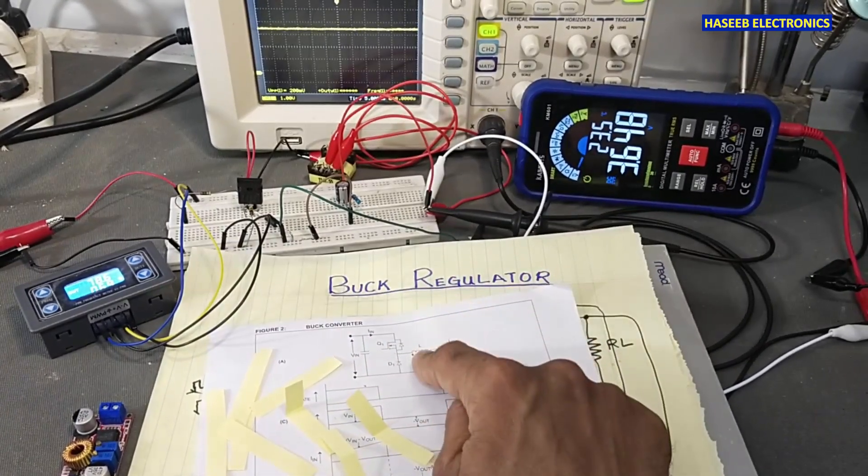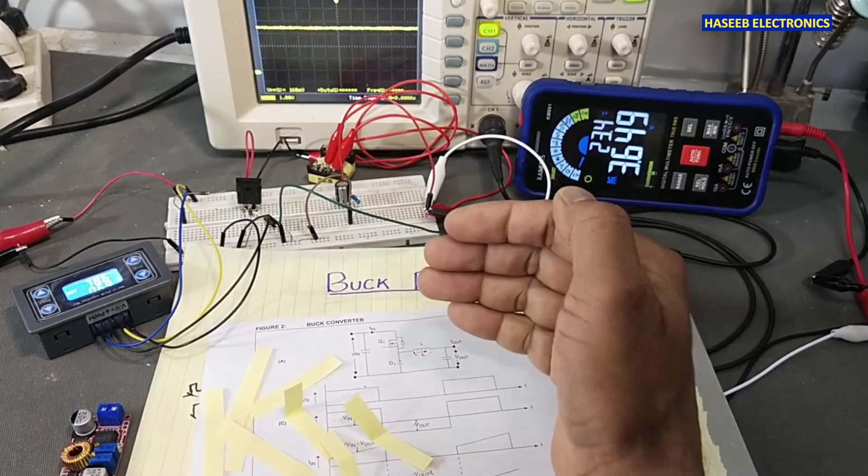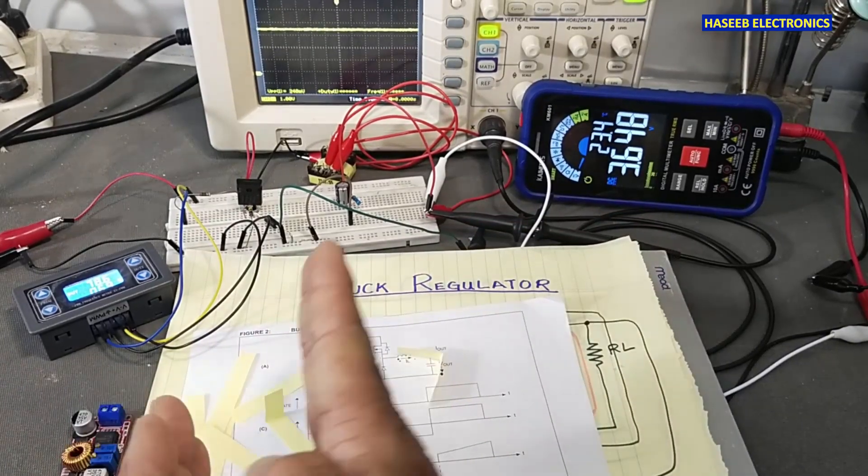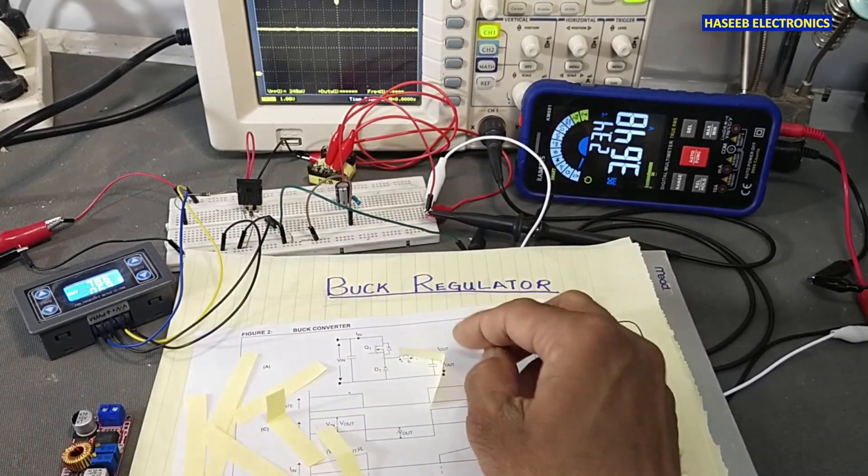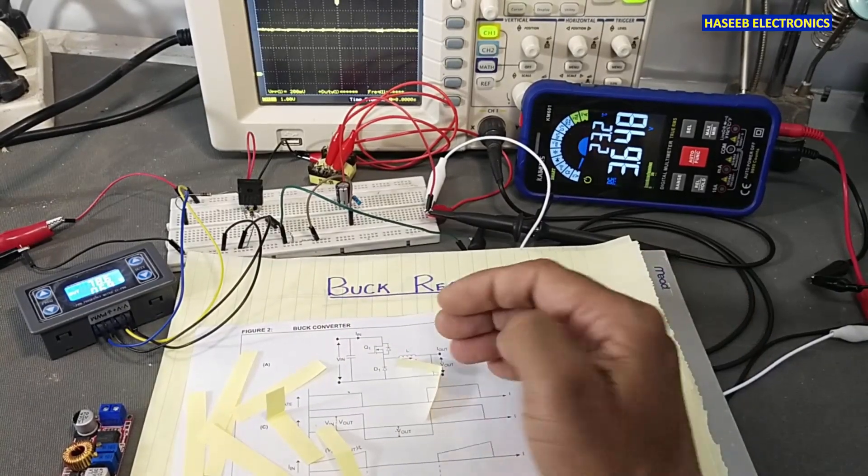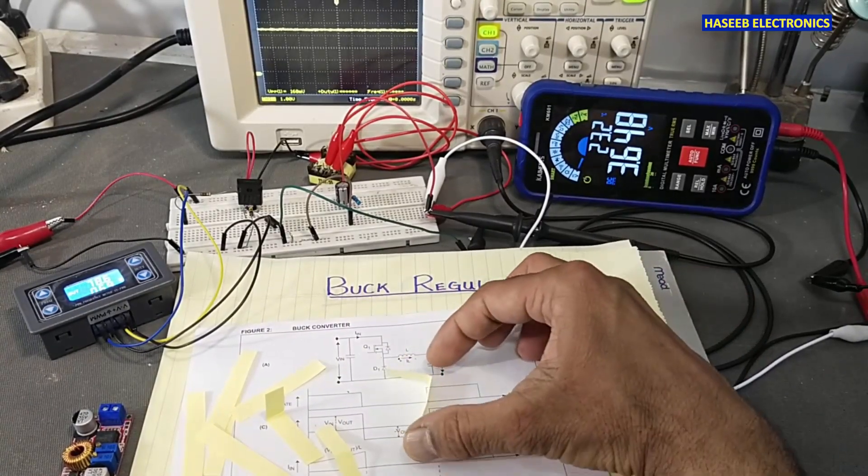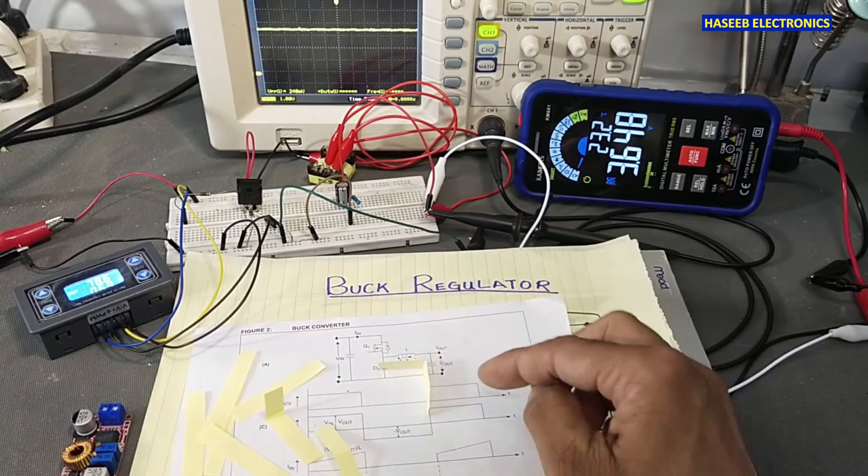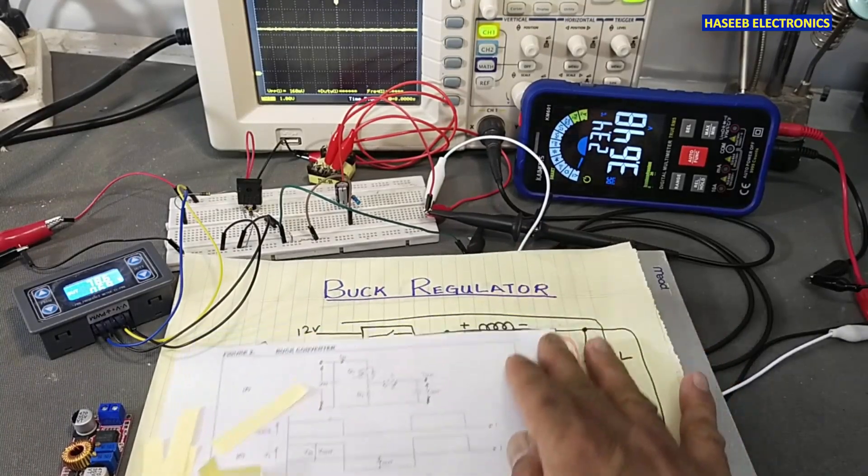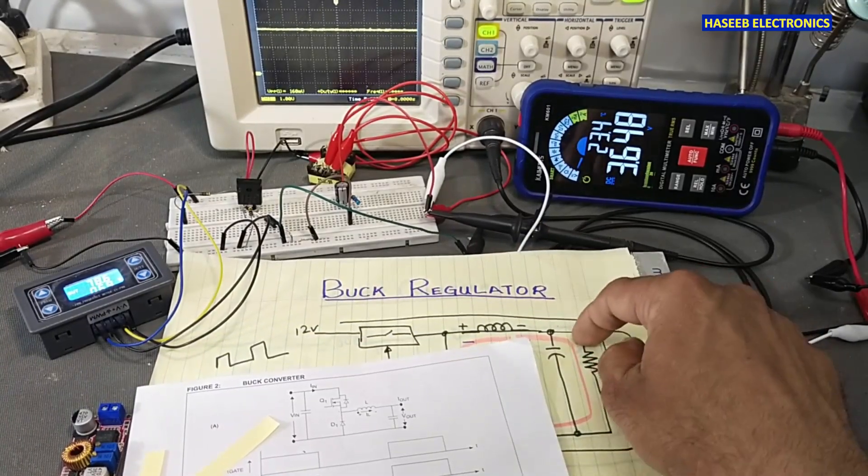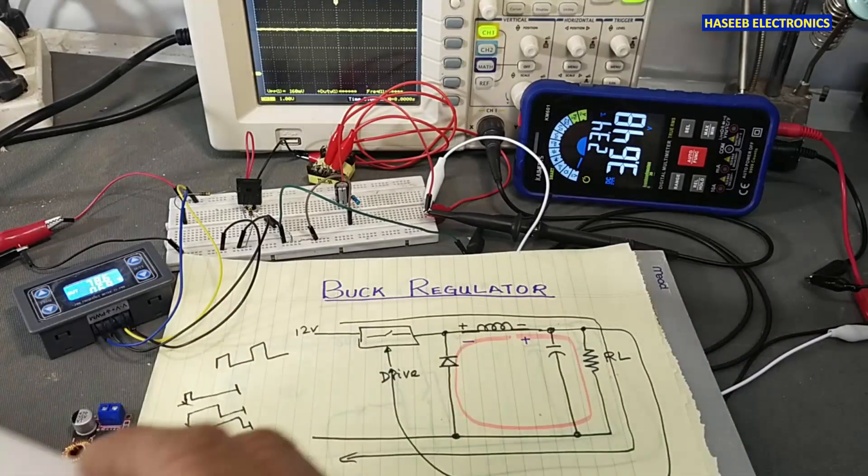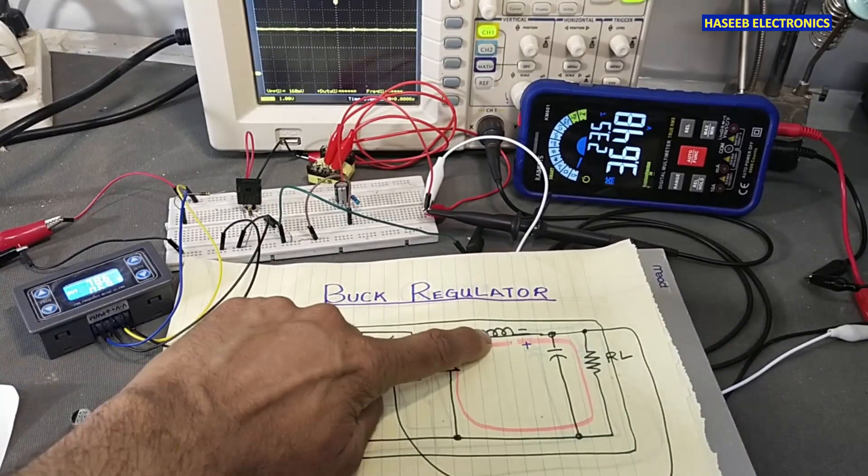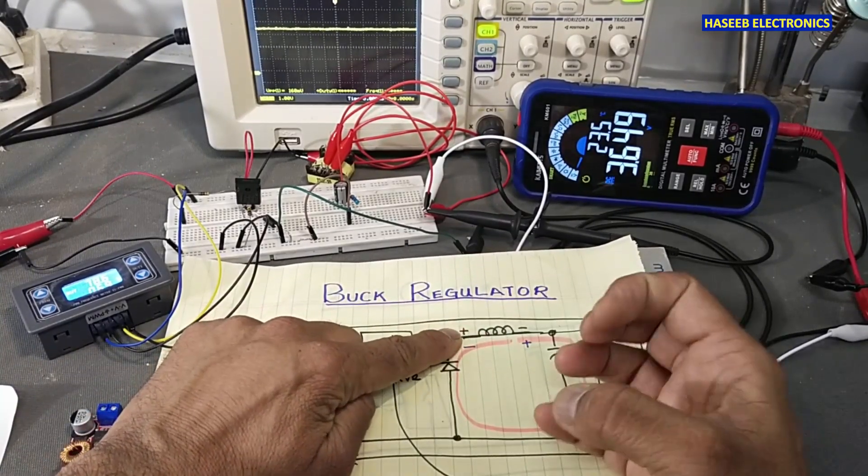These pulses which are coming at specific interval will pass through this inductor. The inductor will clip the voltage level. At the same time we are connecting load here, so load will also discharge this capacitor. When the pulse passes through this inductor it will store in form of magnetic field.